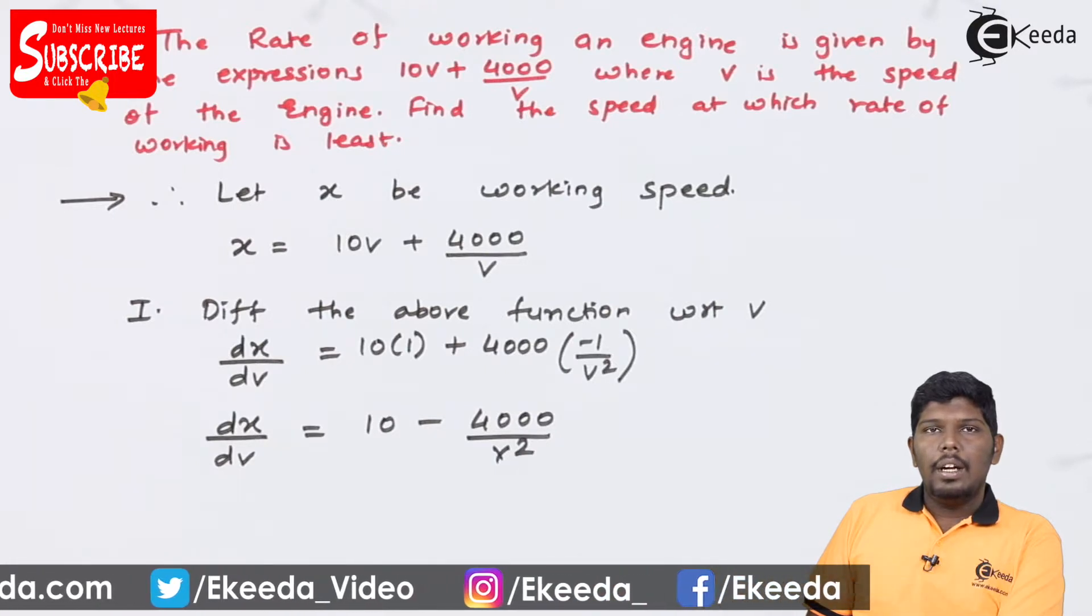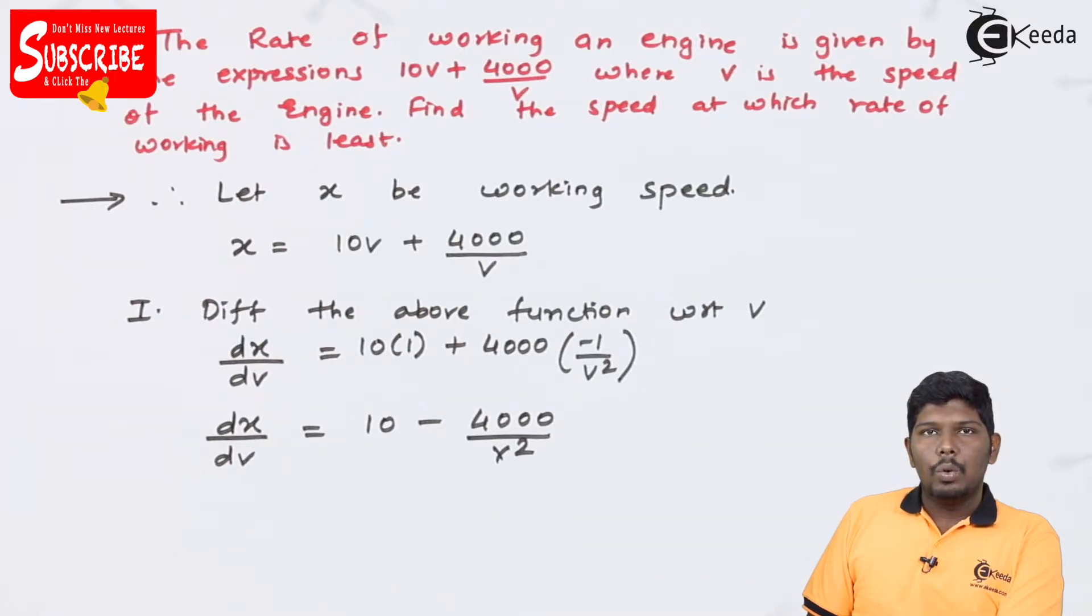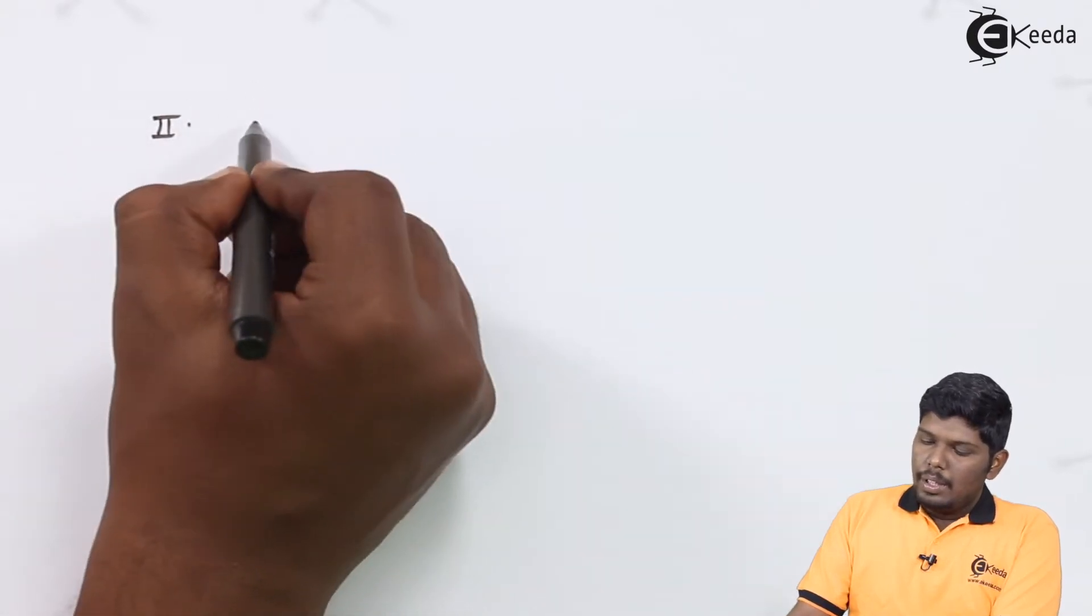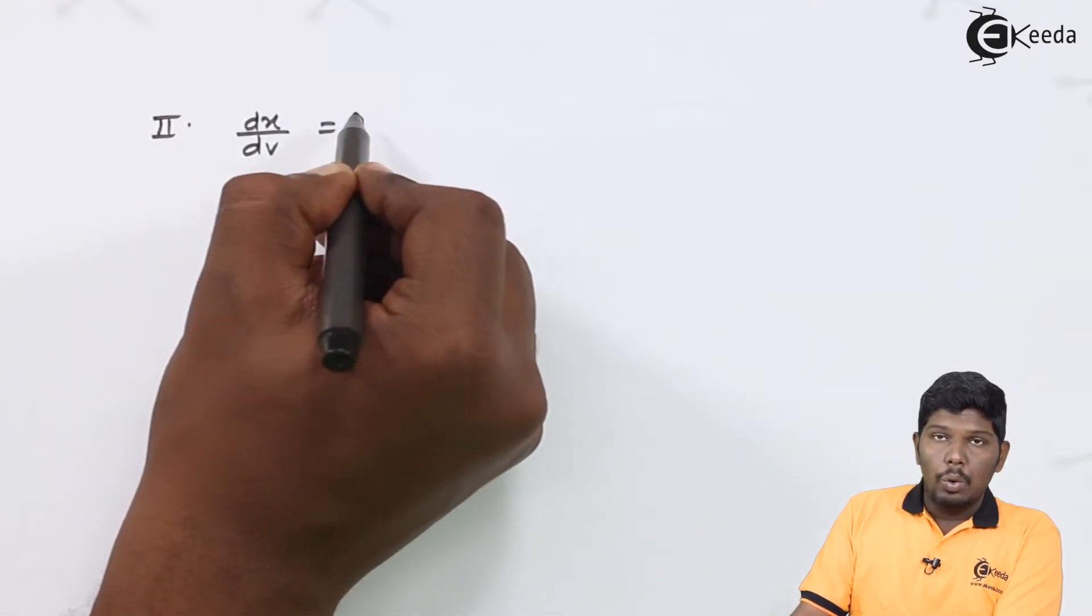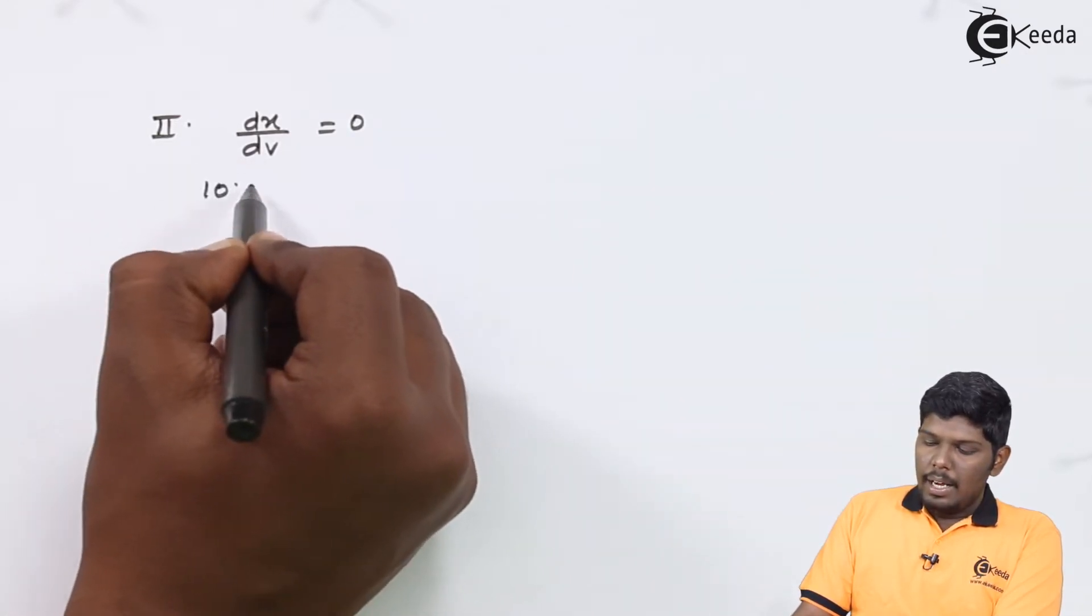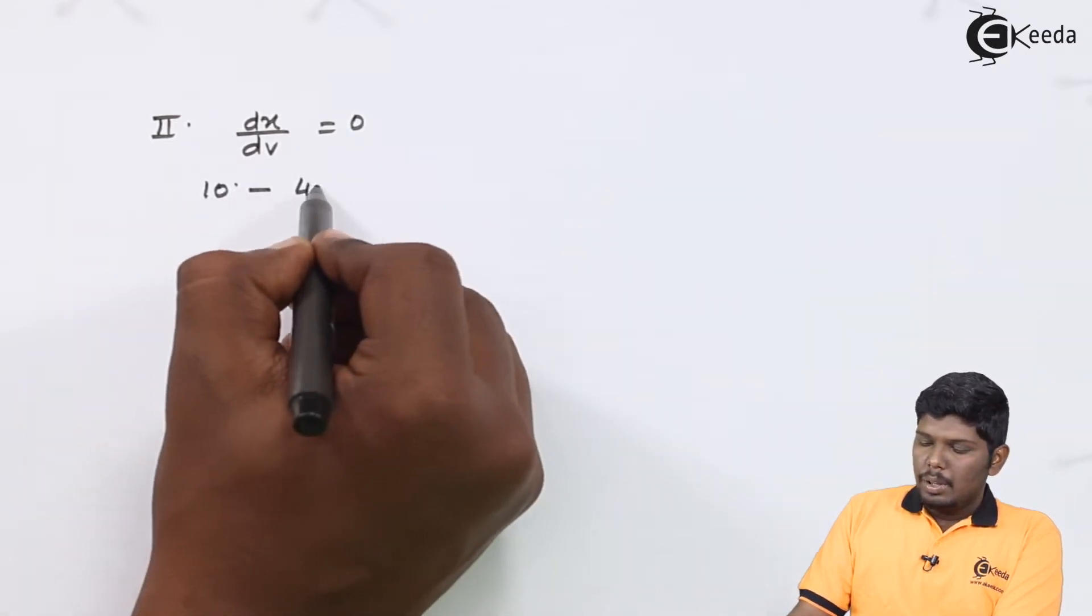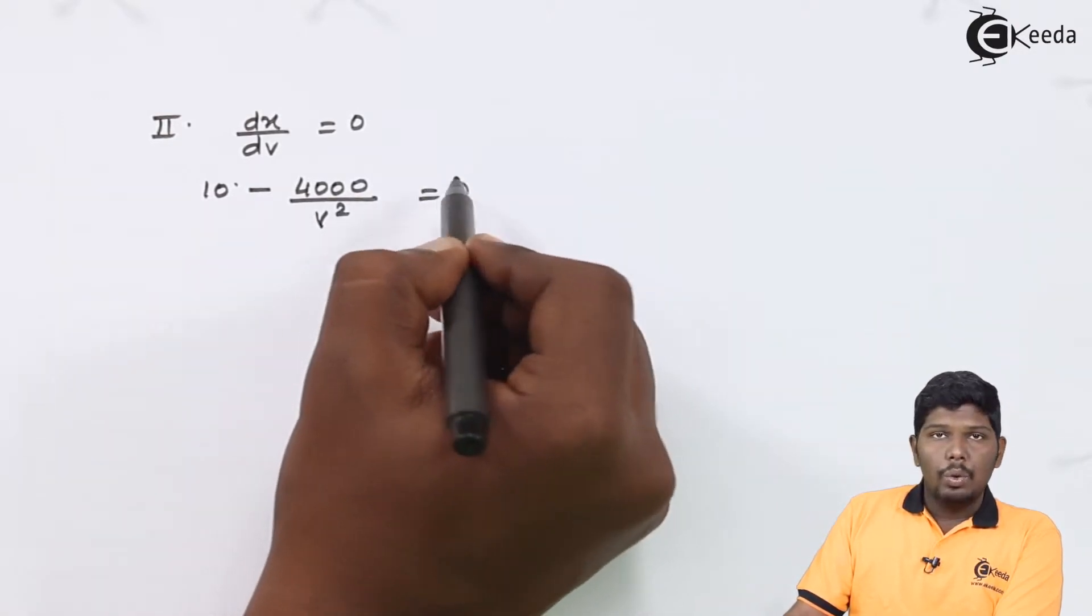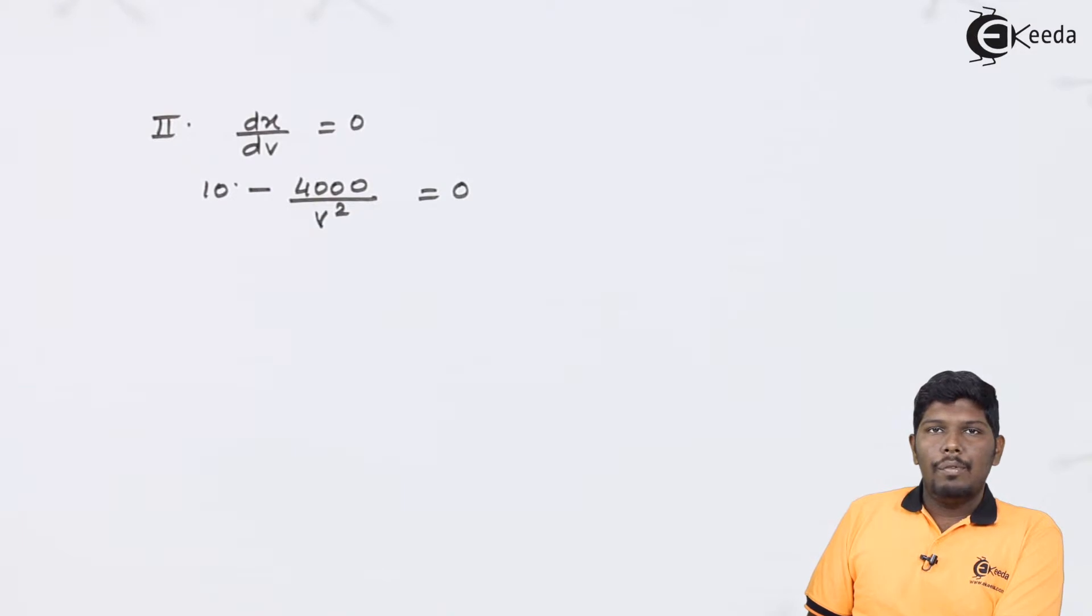The next step is to equate dX by dV to 0. In step 2, dX by dV equals 0, that is 10 minus 4000 upon V square equals 0. From this equation, we will find the value of V.